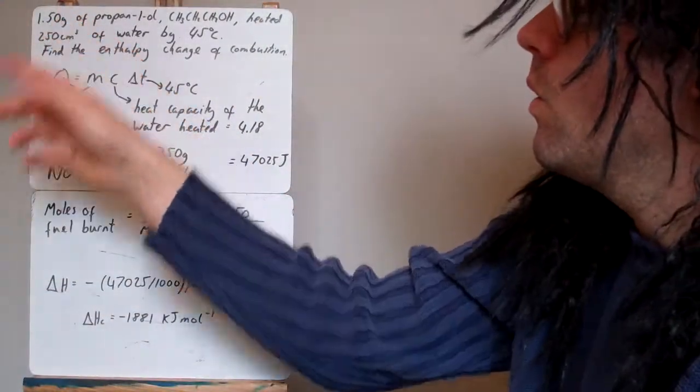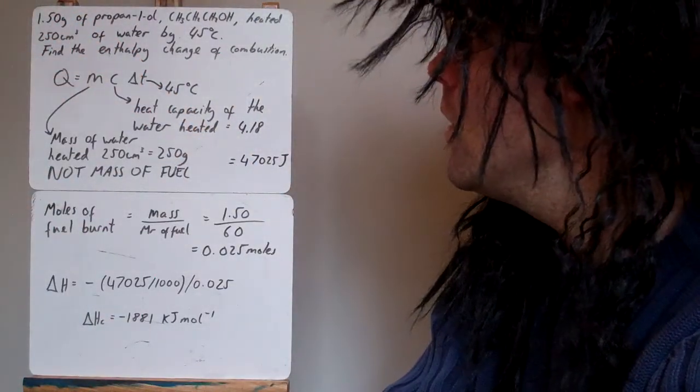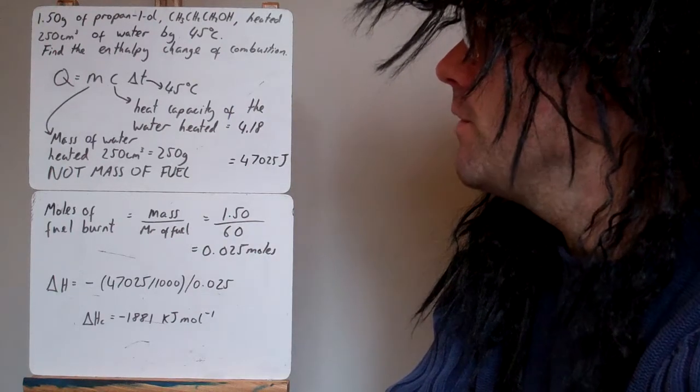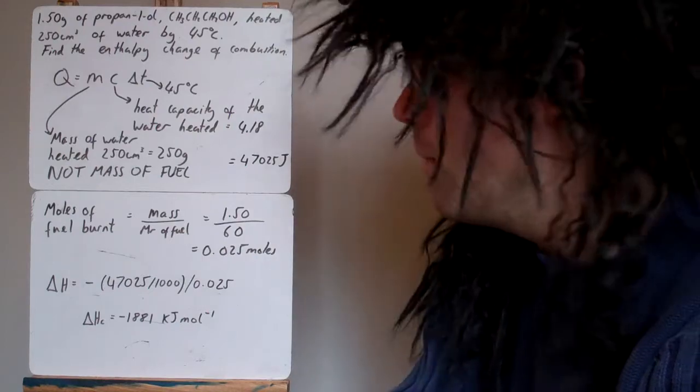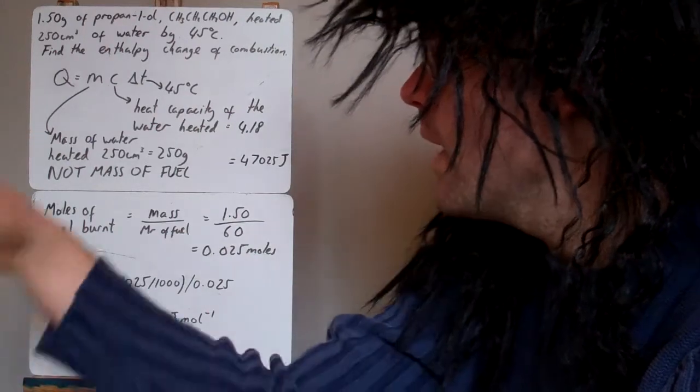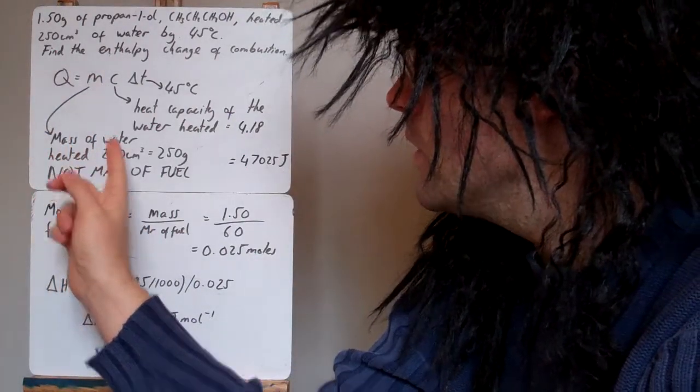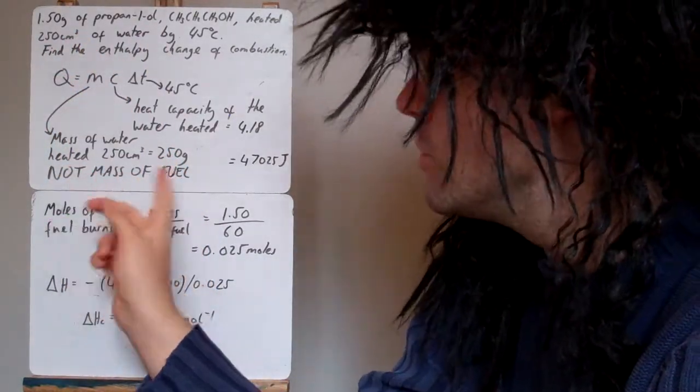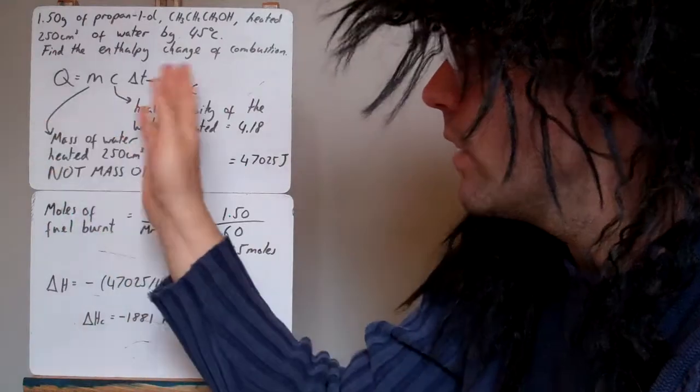So here we've got 1.5 grams of propan-1-ol. We heated 250 cm³ of water by 45 degrees centigrade. Find the enthalpy change of combustion. So M is the mass of water. So we said it's 250 cm³. So that would be 250 grams. Remember it's not mass of fuel. That does not go into this equation at all.